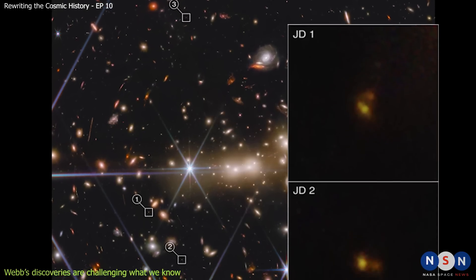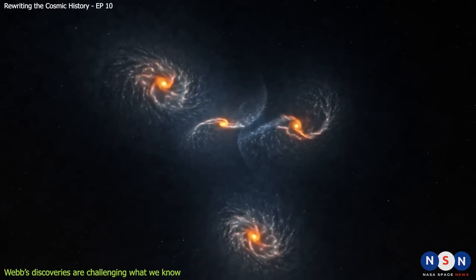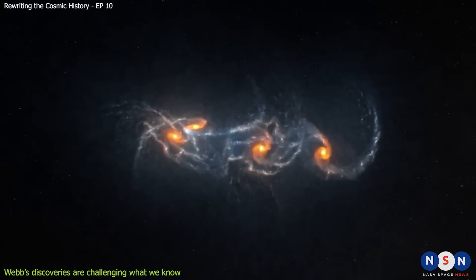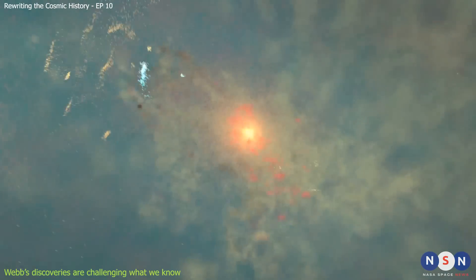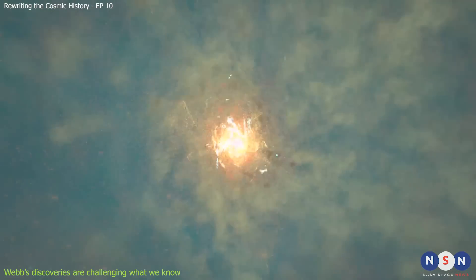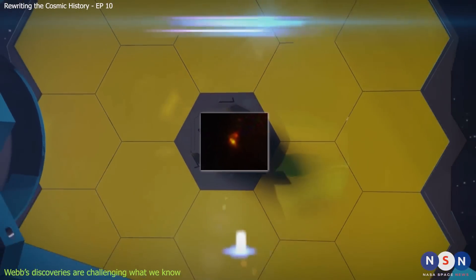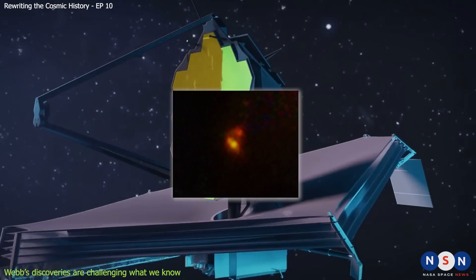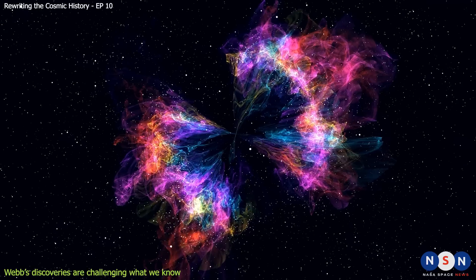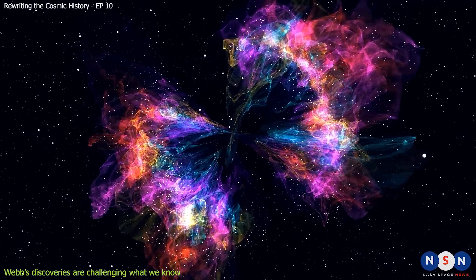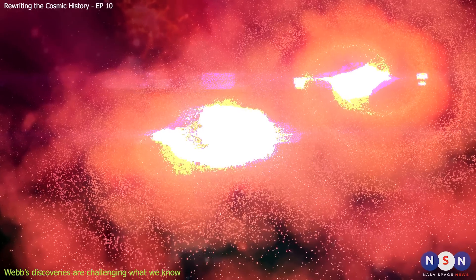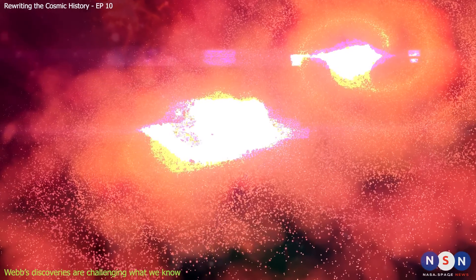Another recent discovery was a galaxy merger in the early universe. A galaxy merger is when two or more galaxies collide and merge into one larger galaxy. Galaxy mergers are common in the universe and they can trigger bursts of star formation and shape the evolution of galaxies. However, galaxy mergers are expected to be rare and slow in the early universe because there was not enough time for galaxies to interact with each other or to be influenced by their environment. But JWST found a galaxy merger that happened when the universe was only about 500 million years old. This merger involved two massive galaxies that each contained about 10 billion stars, and it produced a huge amount of infrared light that indicates intense star formation.